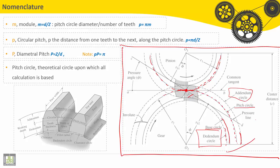We can see here the pressure line. The pressure line is tangent to both base circles on the gear and the pinion. It passes through P. P is the contact point between teeth on the driver and driven, the pinion and gear.